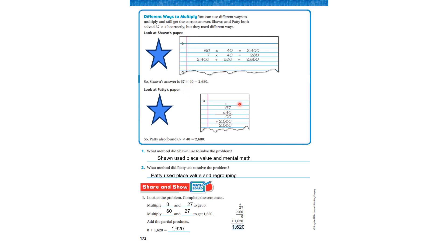Okay, now look at Patty's. Patty just did it the way that we just did it. The zeros. 0 times 7 is 0. 0 times 6 is 0. Look at that 0 right there. There's his placeholder. And then he multiplied 4 times 7 is 28, carried the 2. 4 times 6 is 24, plus 2 is 26. 26, 80. So, Patty also found 67 times 40 as 2,680.